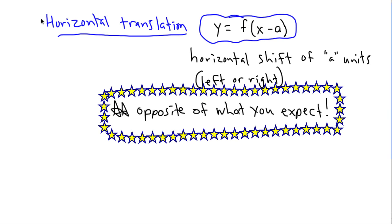In the last video, we were talking about horizontal translations, saying that y equals f of x minus a. If it's in the brackets, then it does a horizontal shift of a units, either left or right.